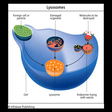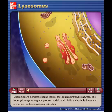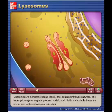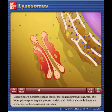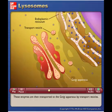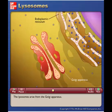Let's take a look at the animation about lysosomes. Lysosomes are membrane-bound vesicles that contain hydrolytic enzymes. The hydrolytic enzymes degrade proteins, nucleic acids, lipids, and carbohydrates, and are formed in the endoplasmic reticulum. These enzymes are then transported to the Golgi apparatus by transport vesicles. The lysosomes arise from the Golgi apparatus.